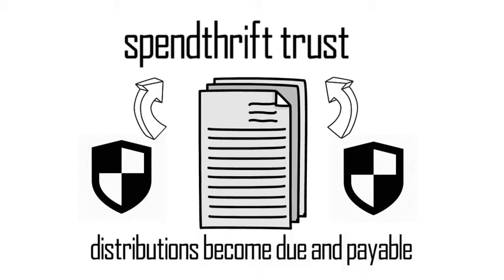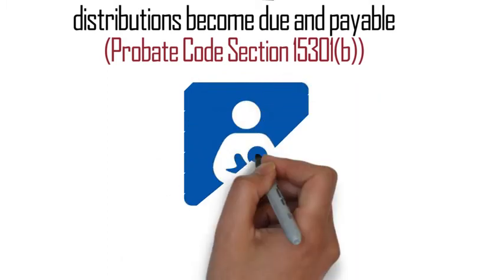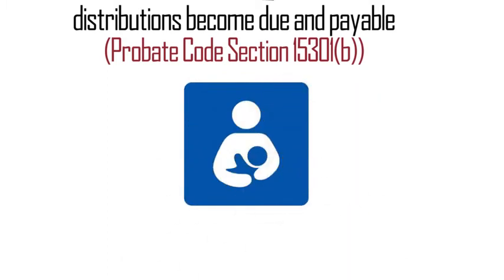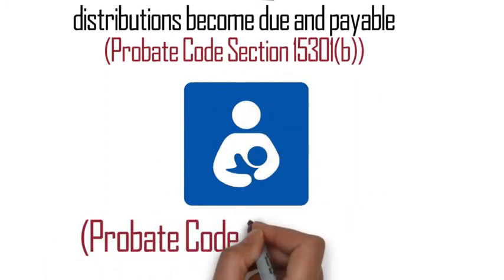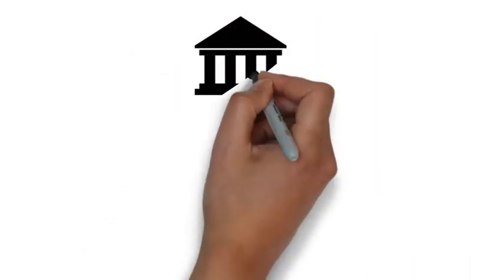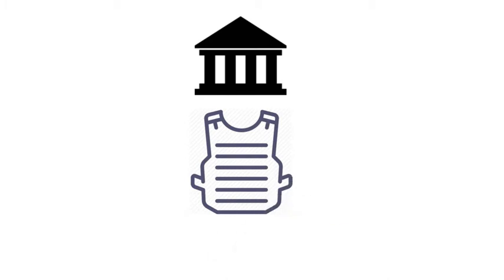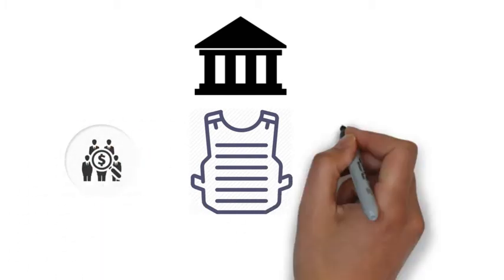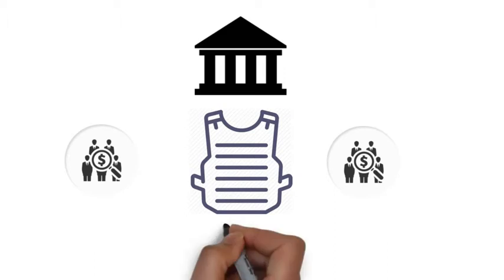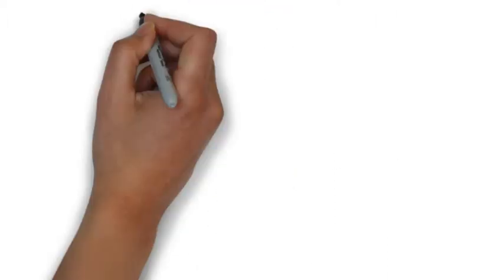It also does not exist with respect to support orders for spousal or child support that exist against the beneficiary of the trust. The takeaway is that while spendthrift trusts are useful, they are not one hundred percent bulletproof — some portion of them will be made available to creditors regardless of the grantor's intent.